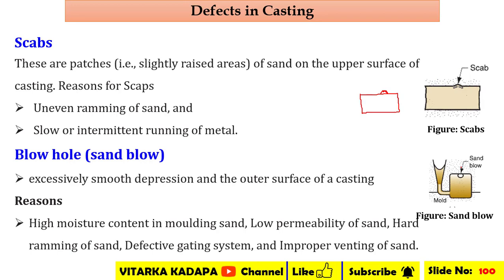The next defect is blowholes. Blowholes are excessively smooth depressions on the outer surface of the casting where some quantity of air remains inside the mold cavity. Due to this, the casting is not able to occupy the entire mold cavity, leaving the air trapped at one particular corner.